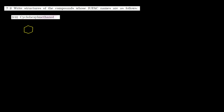7th part mein kya banana hai — cyclohexyl methanol. Cyclohexyl ka matlab kya ho — aapko banaani hai 6 carbon atoms ki ring. Toh yeh banayi aapne ring. Aur yeh kya hai — methanol. Methanol ka matlab ek carbon atom, aur us par OH group. Toh yahan par yeh ho jayega CH2 aur OH. Toh yeh kya bana — cyclohexyl methanol. Clear hai.